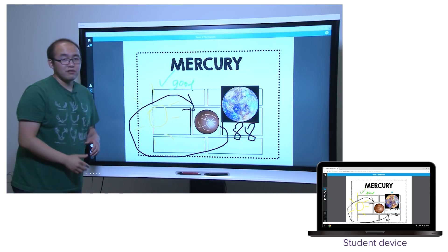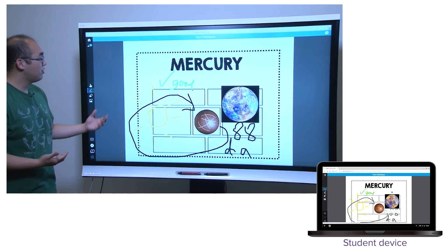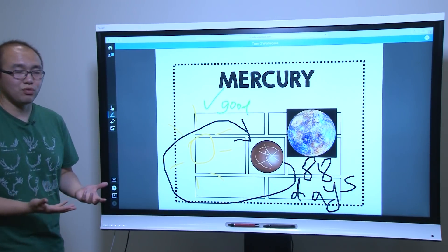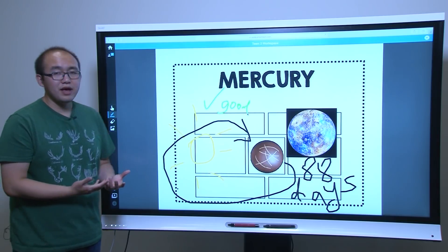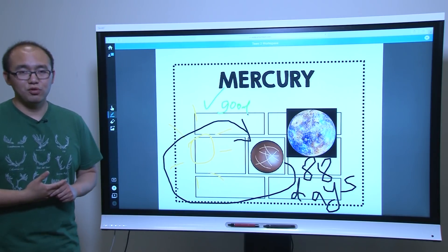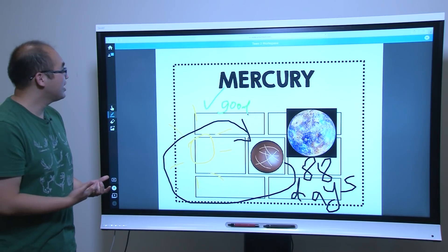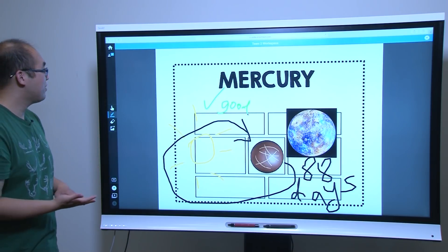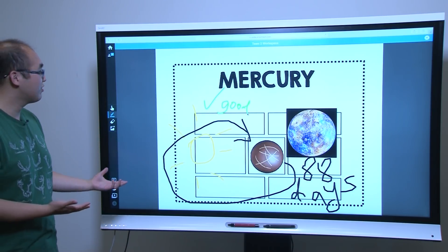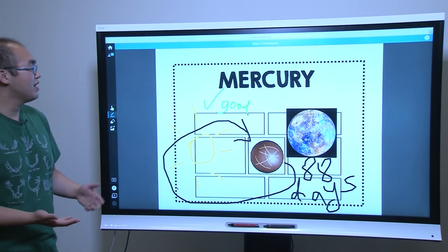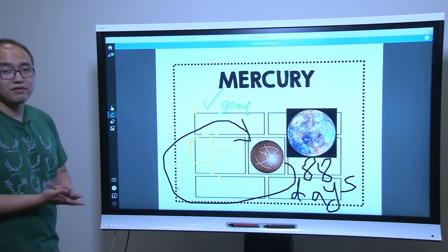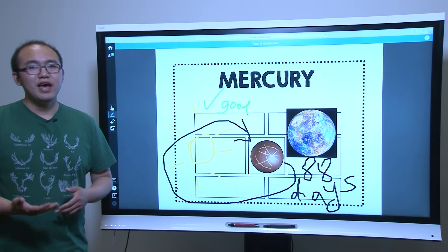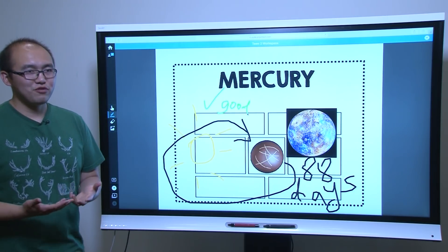At the end of the activity, teachers also have the option to pull up a group's workspace and have the group come up to the SMART board to present their work. So as you can see, with the new features added to SMART Learning Suite Online, it makes it really easy for teachers to take content they already have and supercharge it by adding new activities or converting existing content into activities — like this new workspace activity — to make it engaging for students. Thanks for watching, and keep an eye on this playlist for future updates.